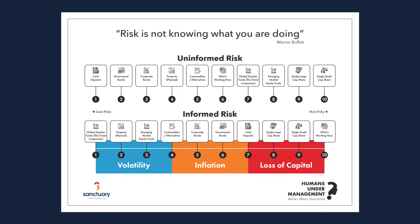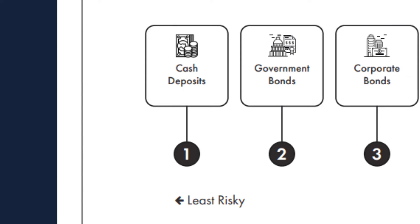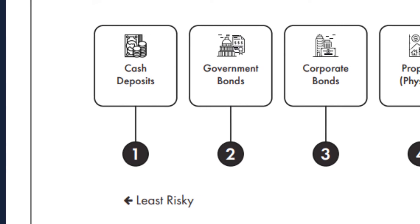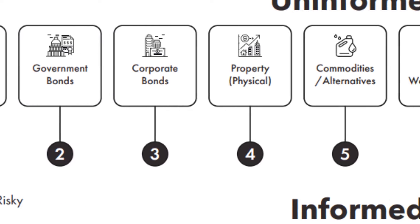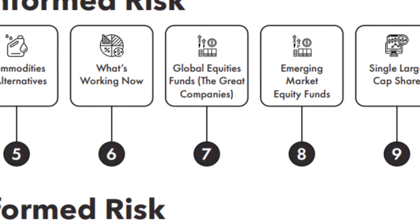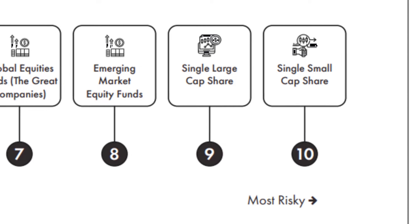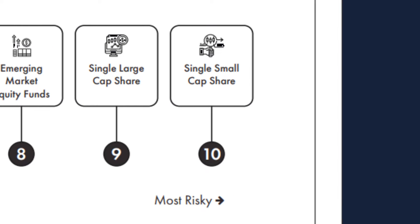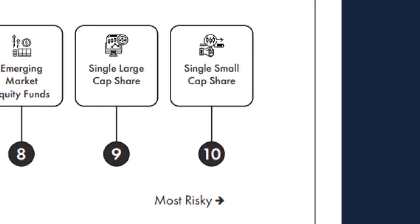The uninformed risk is how risk is perceived in the UK by what we hear in the press and what we've been taught about what risk is. And that effectively is on a scale of one to ten, with one being cash deposits — that being the least risky way to invest. Then you've got government bonds, corporate bonds, physical property, commodities, what's new, global equities, emerging markets, equity funds, small cap and large cap shares.